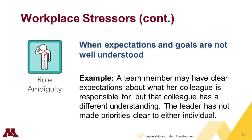Role ambiguity occurs when people are unclear or uncertain about their expectations within a role. It can occur when someone's job is vague and they experience unclear goals, expectations, or responsibilities. Employees who experience role ambiguity tend to perform at lower levels than those with a clear understanding of job requirements. Persistent role ambiguity can result in job tension, anxiety, frustration, and burnout.